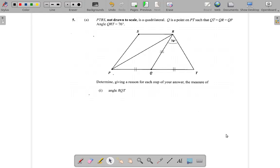Question 5A from the May 2017 CSEC Maths paper. PTRS, not drawn to scale, is a quadrilateral, that means four-side.